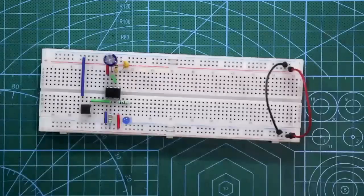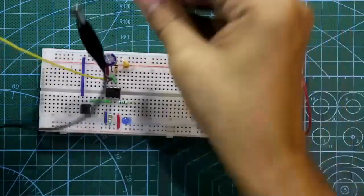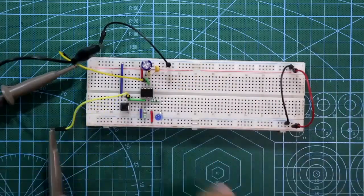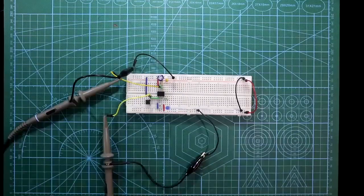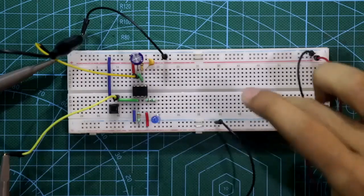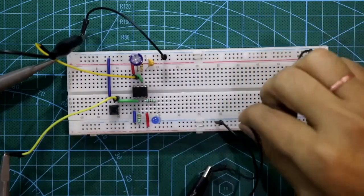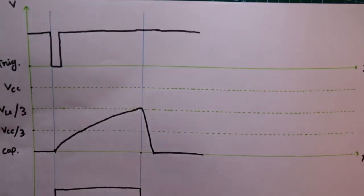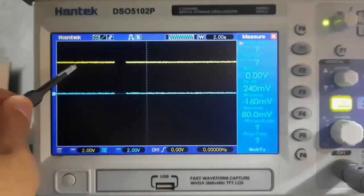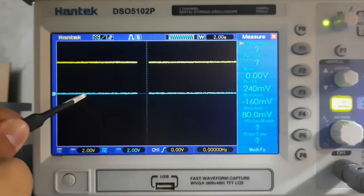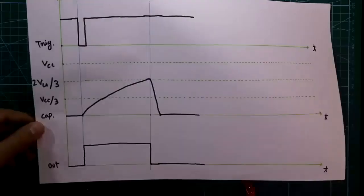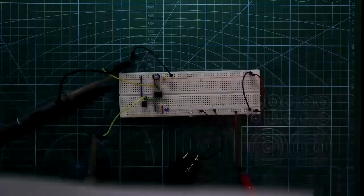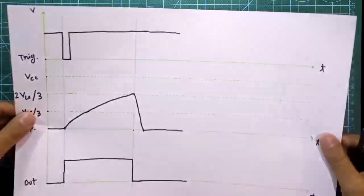One probe is connected across the capacitor and another probe is connected across the push-to-on switch. Now connecting the 5V power supply. The trigger signal is initially in logic high. The capacitor voltage is zero and the output is zero — this is the initial condition.